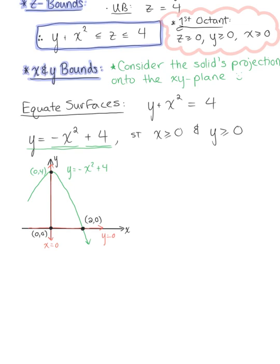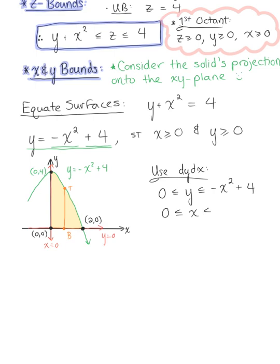The region bounded by these three curves is the projection on the xy-plane. Running a pencil across this region, we can see that the parabola is always the top curve and the x-axis is always the bottom curve. So using the order of integration dy dx, y is always greater than or equal to 0 and less than or equal to negative x squared plus 4, and x is always greater than or equal to 0 and less than or equal to 2.